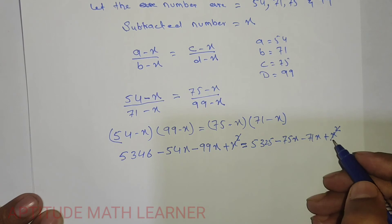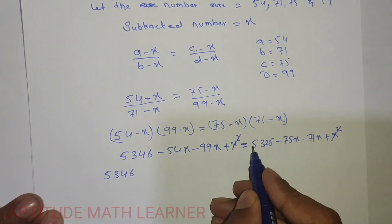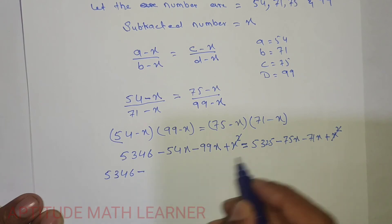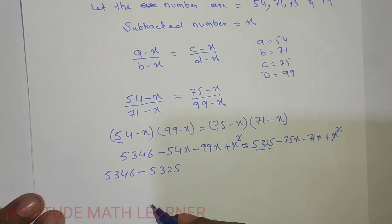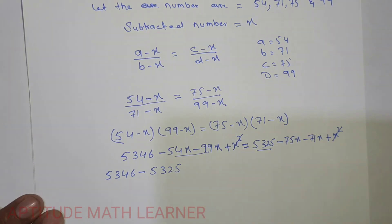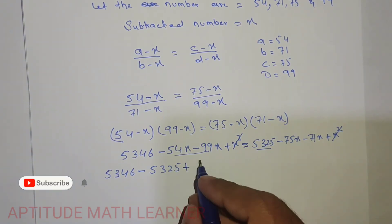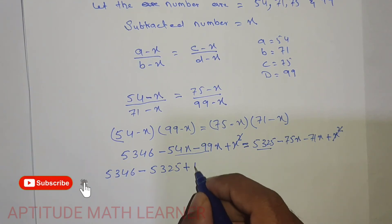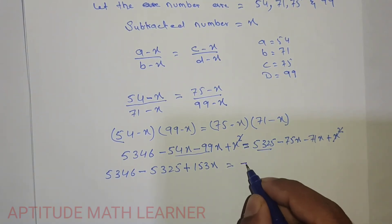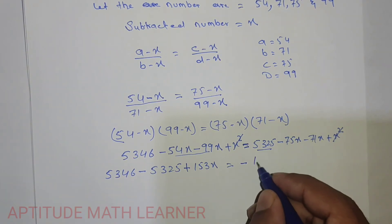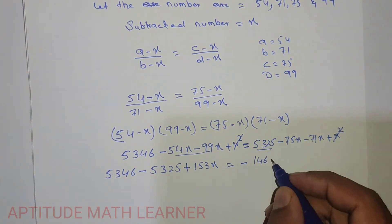The x squared terms cancel with each other. We get 5346 minus 5325 on one side. Rearranging, the x terms combine: 54 plus 99 gives 153x on one side, and 75 plus 71 gives 146x on the other side.